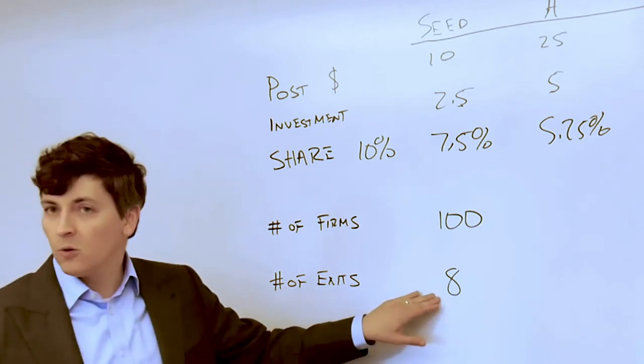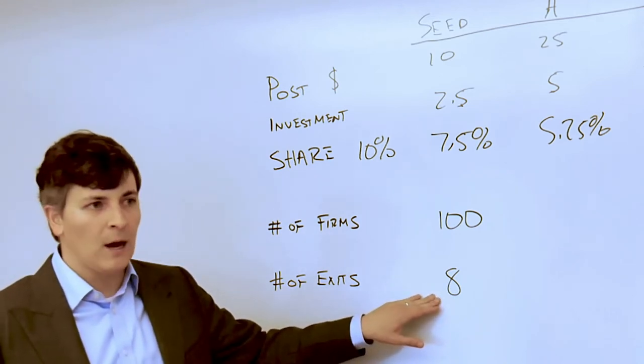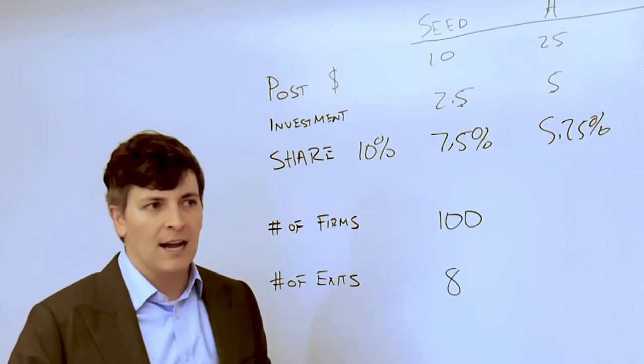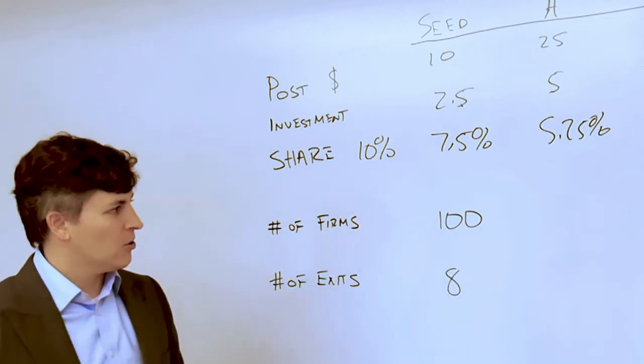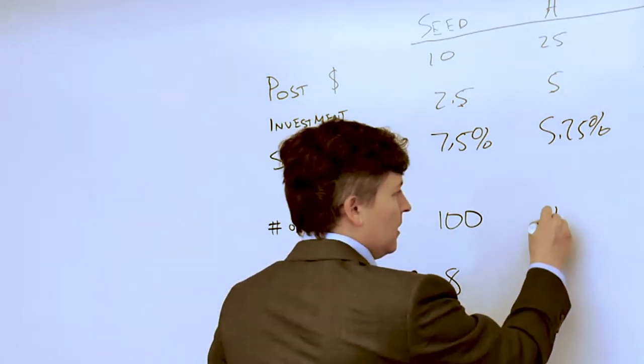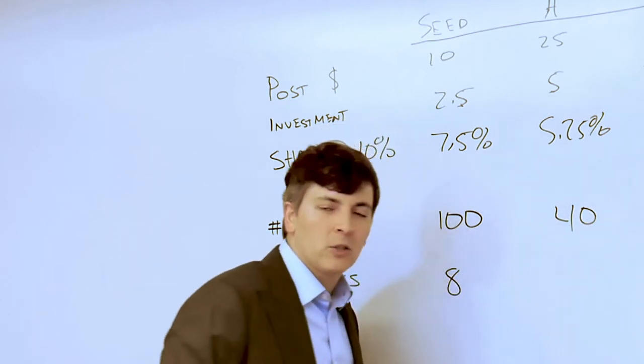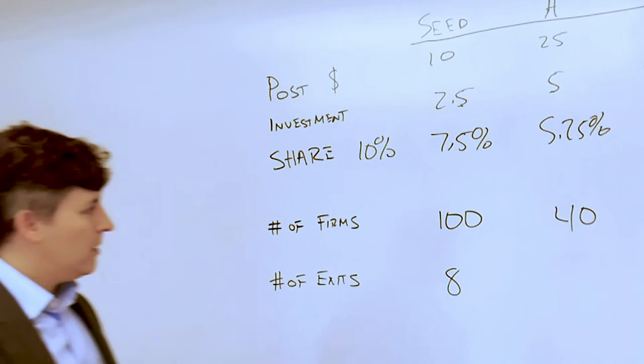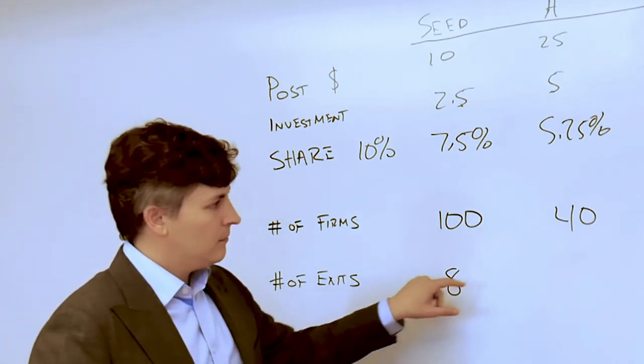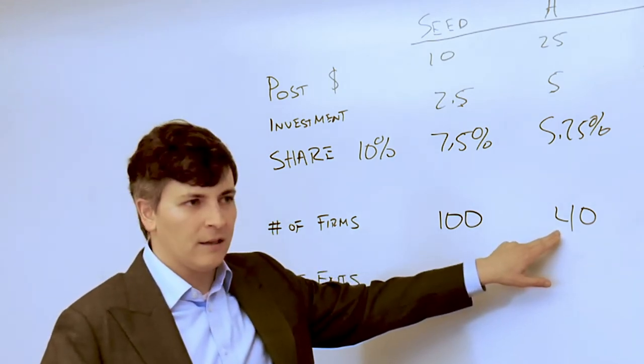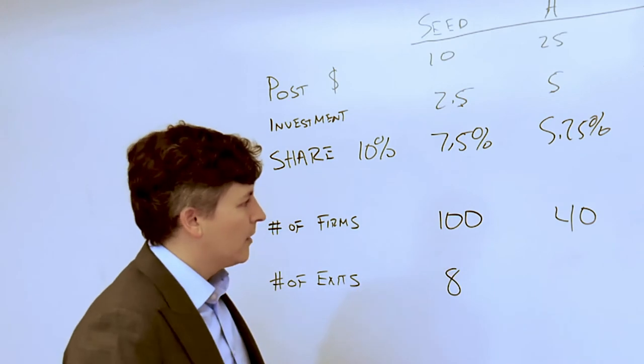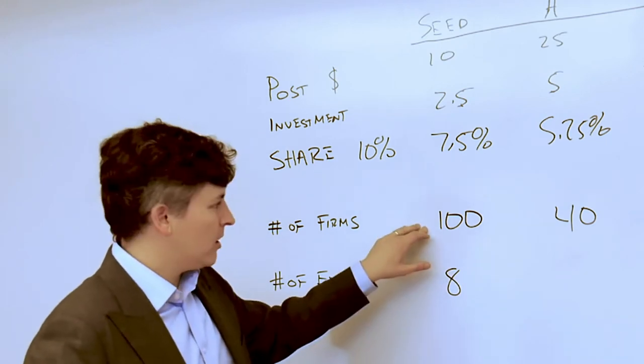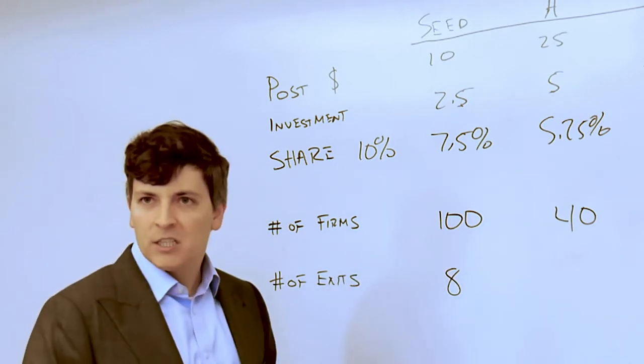Many of the firms at this stage are also going to end up failing without receiving future capital from Series A investors. In our data about 40 firms are going to go on to receive Series A investment. Which means that 8 firms have exited, 40 firms go on to get future investment, and so over half of the firms here have failed at the seed round.